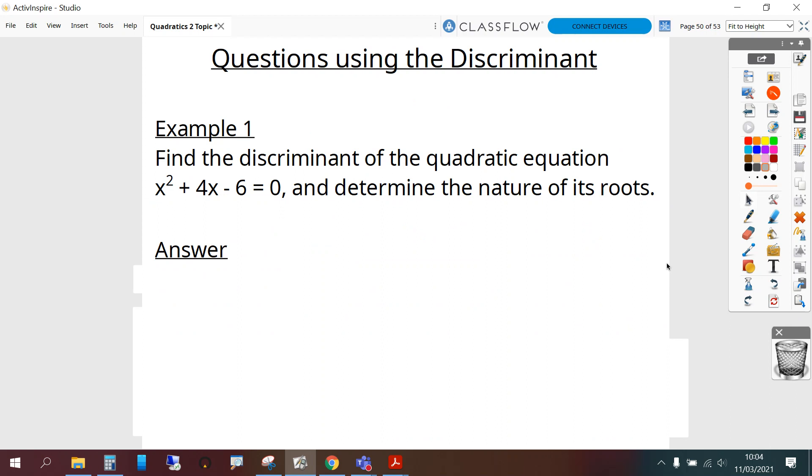So let's answer some questions now using the discriminant. Example 1. Find the discriminant of the quadratic equation x squared plus 4x minus 6 equals 0 and determine the nature of its roots.